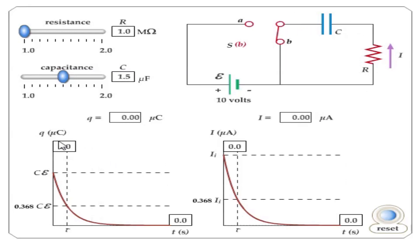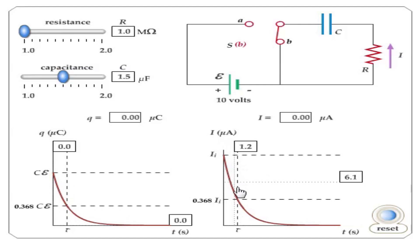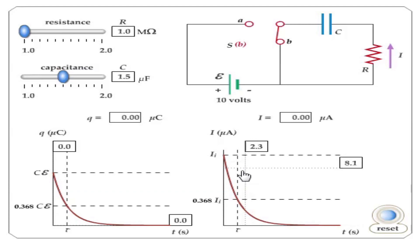At the bottom of the simulation we have the charge versus time graph and the current versus time graph. This charge is the charge stored in the capacitor during the charging or discharging process. We will use the graph to interpret what happens to the charge stored in the capacitor and the current through the capacitor during charging and discharging.